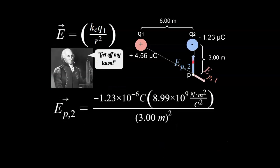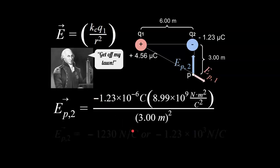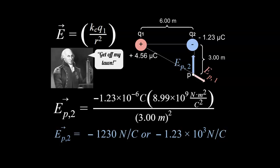For EP2, we plug in the values — we have negative 1.23 microcoulombs. This negative value gives us a negative answer, which means there is an attractive force. If we placed a small positive test charge at P, it would be attracted to Q2. That's why we get a negative sign here. Later in the problem, that sign will be reinterpreted in terms of direction.